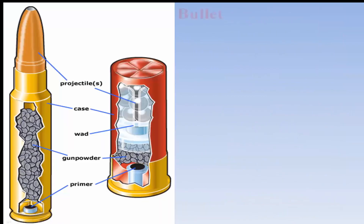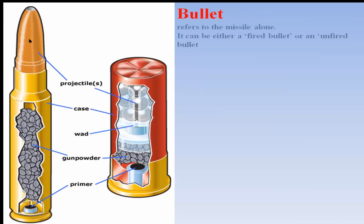What is a bullet? A bullet refers to the missile or projectile. It can be either a fired bullet or an unfired bullet. If you fire a bullet from a firearm it is a fired bullet, and if it is still inside a gun or firearm it is an unfired bullet.